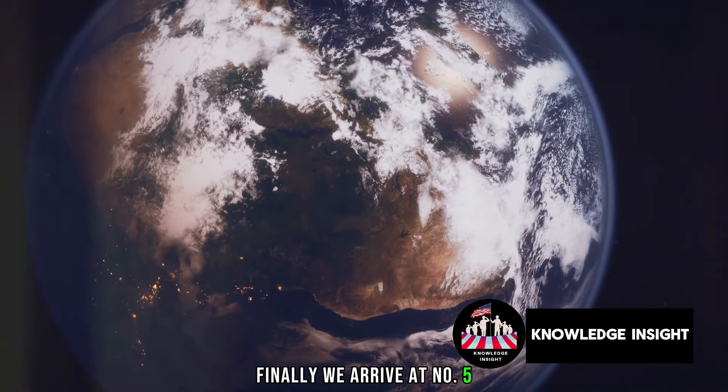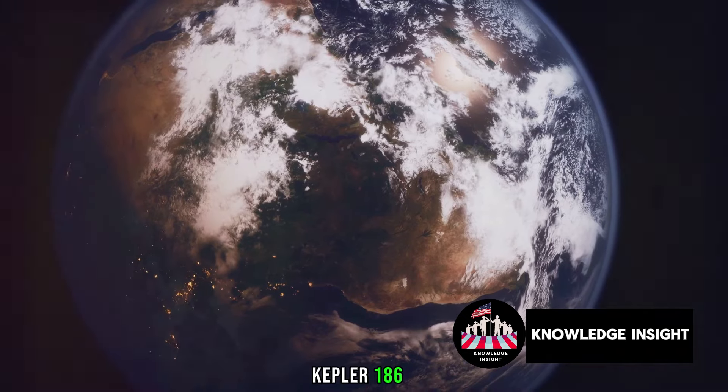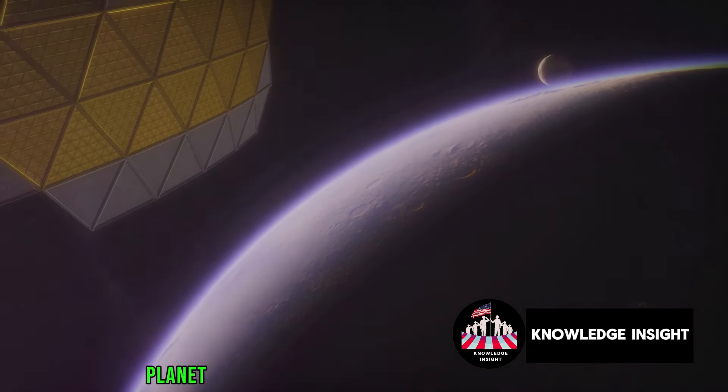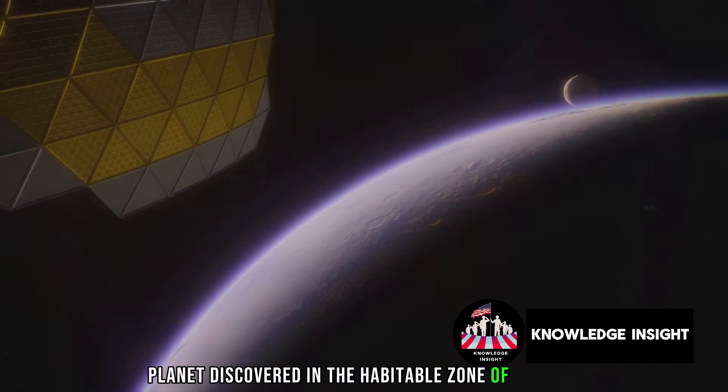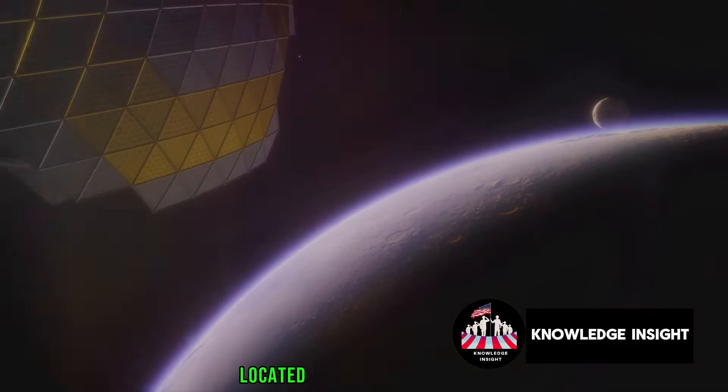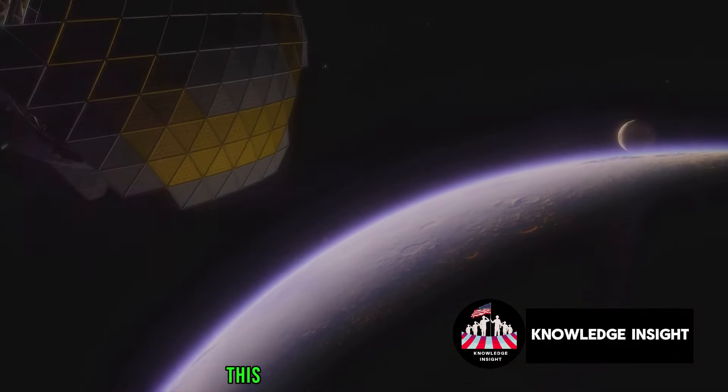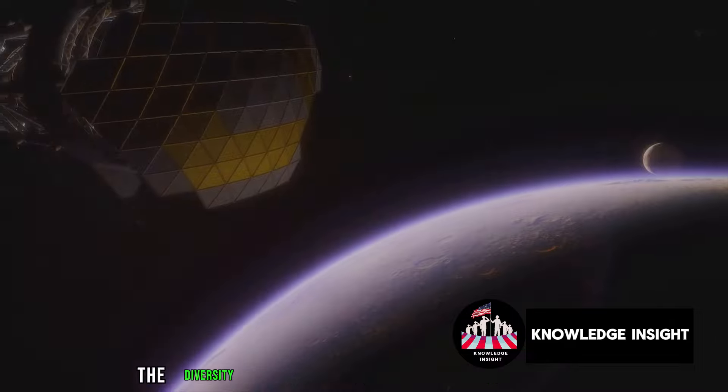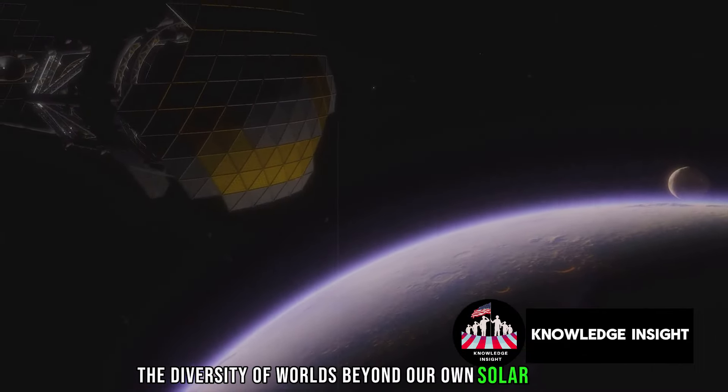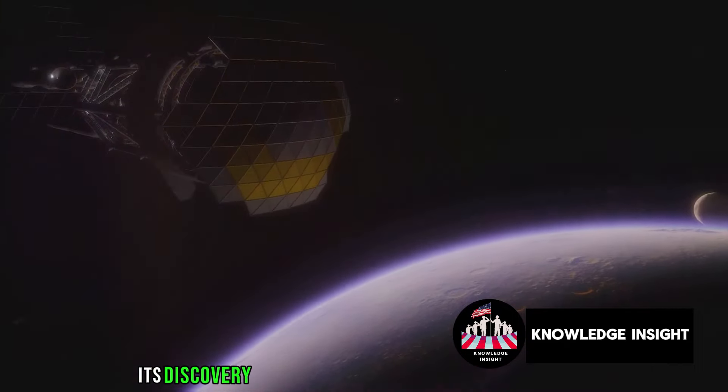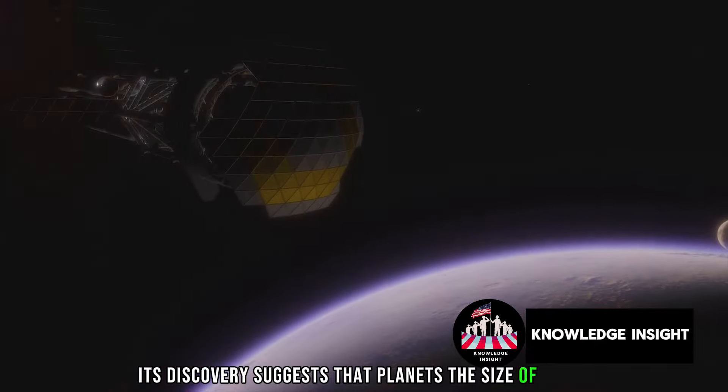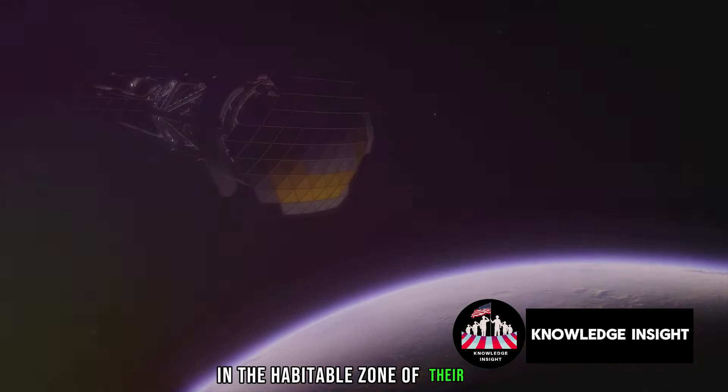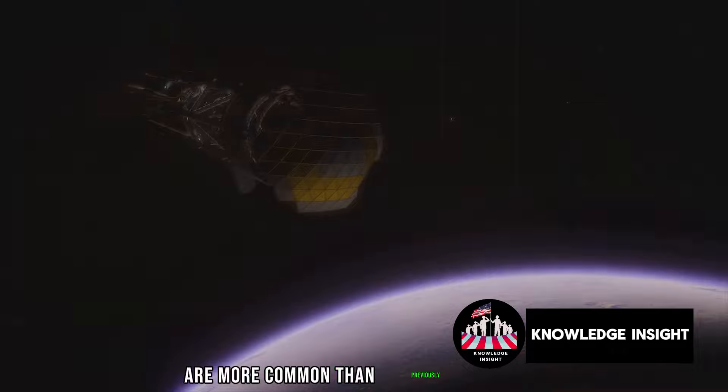Finally, we arrive at number 5, Kepler-186f, the first Earth-sized planet discovered in the habitable zone of its star. Located 500 light-years away, this exoplanet is a testament to the diversity of worlds beyond our own solar system. Its discovery suggests that planets the size of Earth, in the habitable zone of their star, are more common than previously thought.